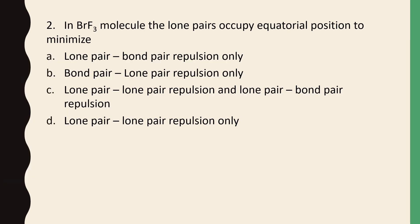In BRF3 molecule, the lone pairs occupy equatorial position to minimize lone pair bond pair repulsion only, bond pair lone pair repulsion only, or lone pair lone pair repulsion and lone pair bond pair repulsion. The correct answer is option D. Lone pair lone pair repulsion only.